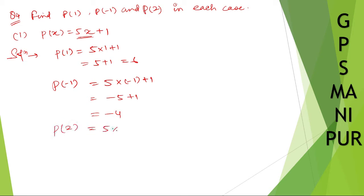p of 2 equals 5 times 2 plus 1, which is 10 plus 1 equals 11.